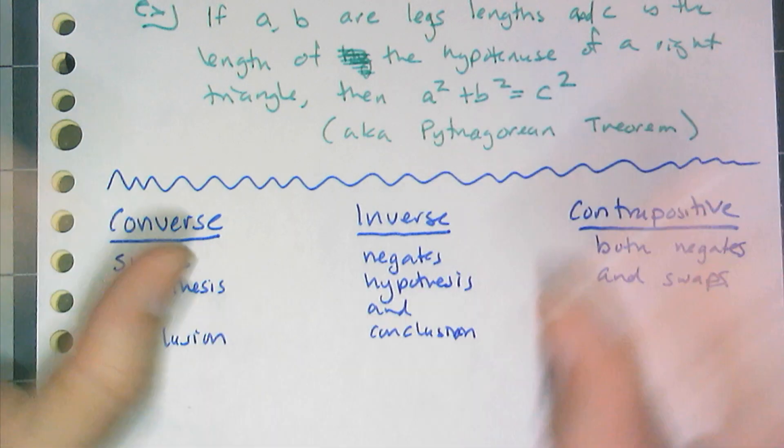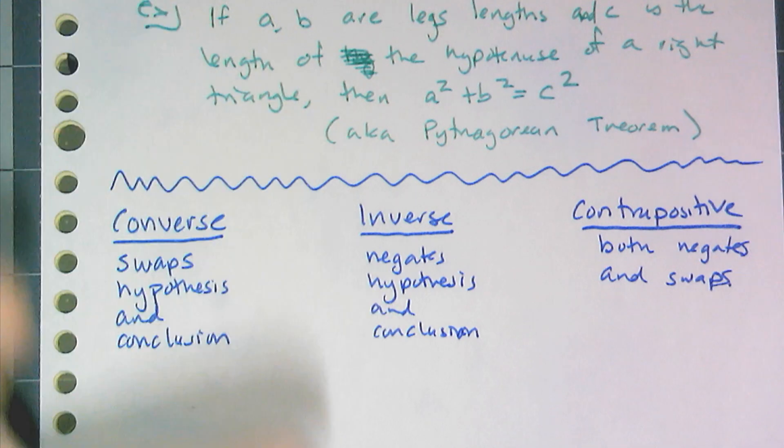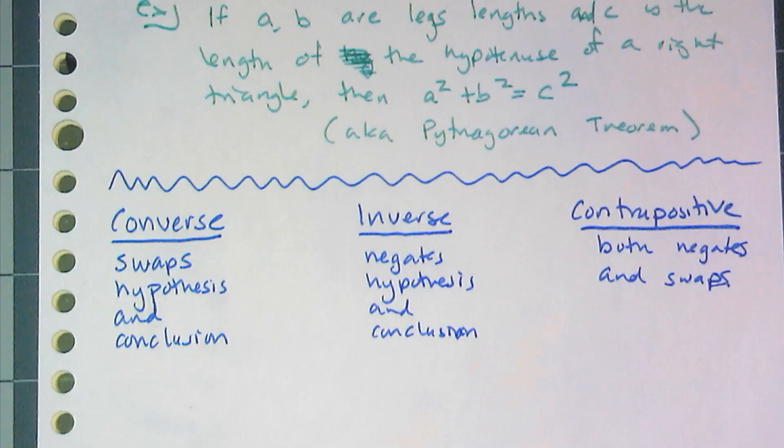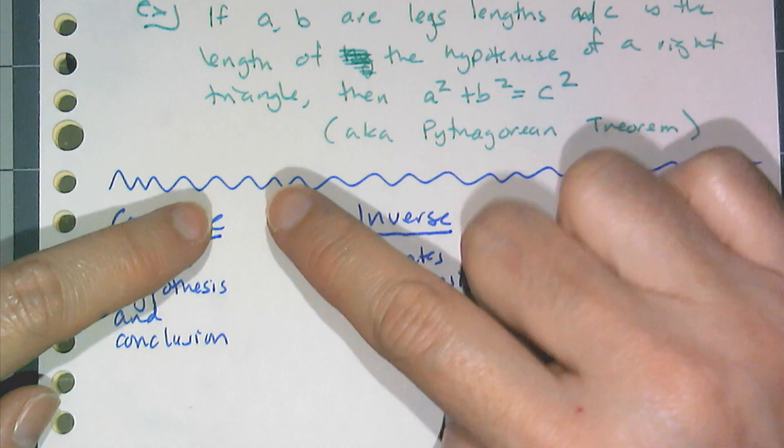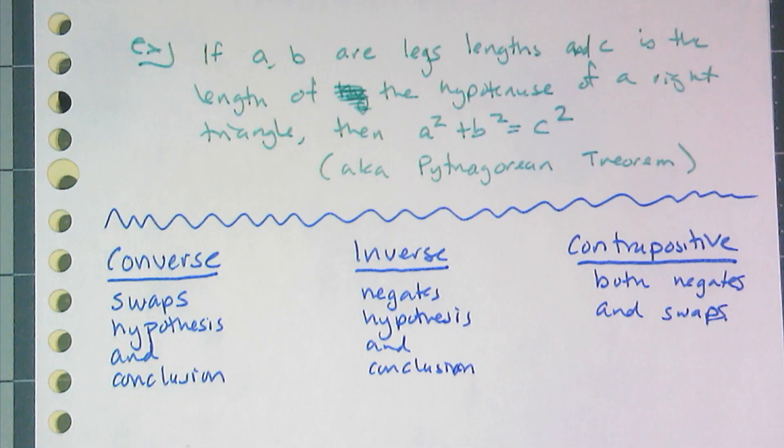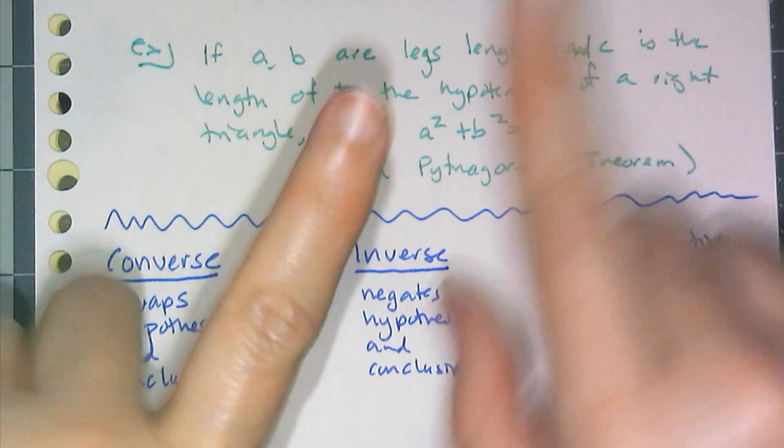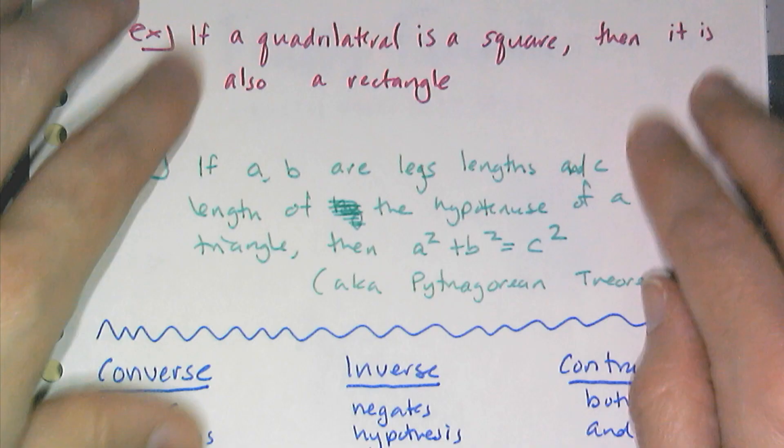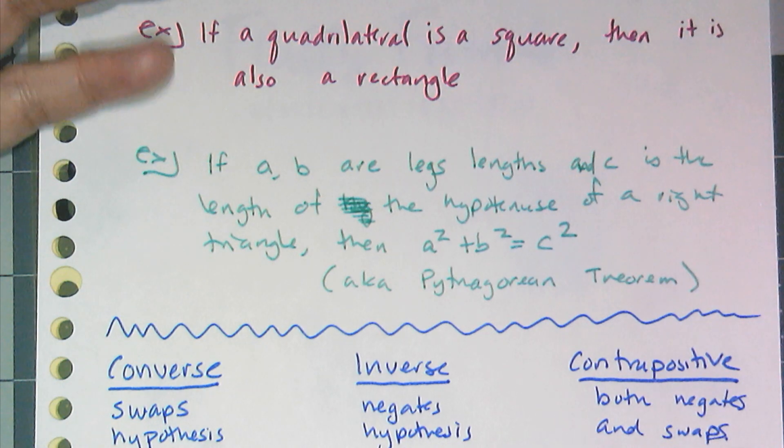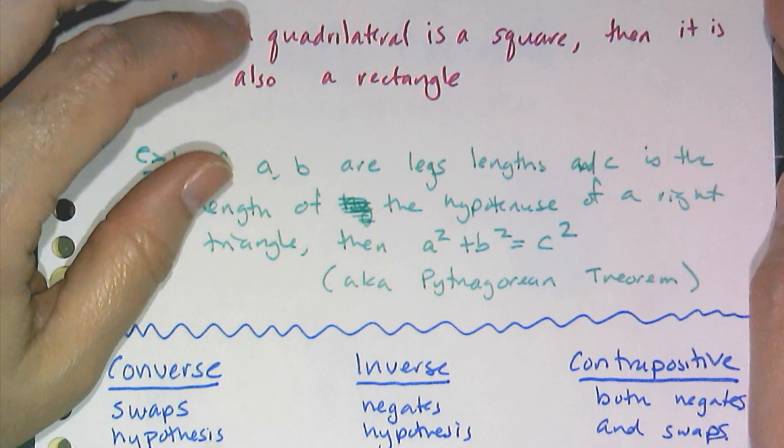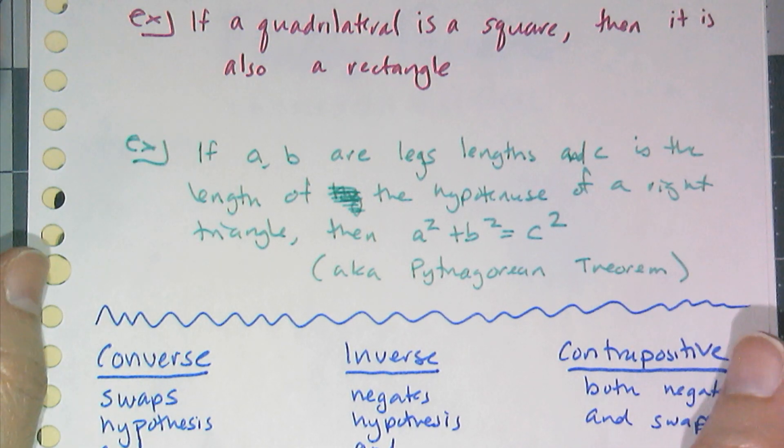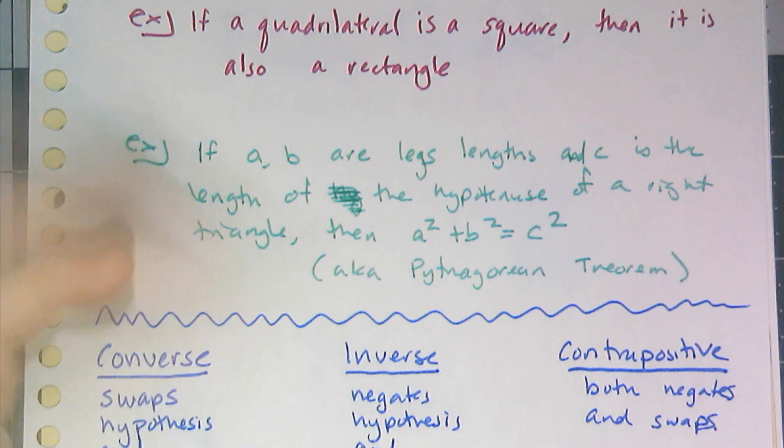Now with conditional statements often gets thrown out three other words. One of them we're going to see quite often, converse. Two others you don't see as often, but I'm just going to throw them out there so you know you've heard them before. Inverse and contrapositive. Now this goes to the study of just pure logic. So a converse is a statement where you swap the hypothesis and the conclusion. So in this case for the Pythagorean theorem would be like if a squared plus b squared equals c squared, then right triangle would be the converse. An inverse is the same order, but you negate things. So you put like a not in front of things. So for example, if a quadrilateral is not a square, then it is not a rectangle. That is an example of an inverse. You just negate the hypothesis and conclusion. And the contrapositive is where you do both, where you negate it and you swap it. So it would be like, if I don't have a rectangle, then I don't have a square. That would be the contrapositive of this first one.